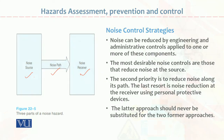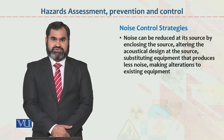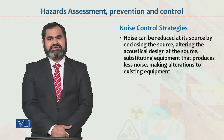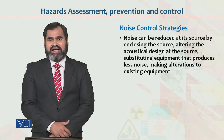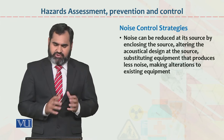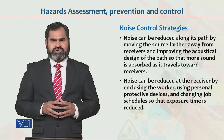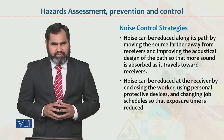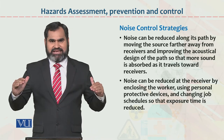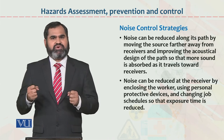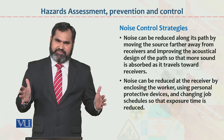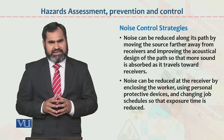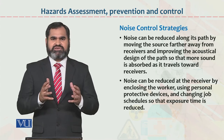Noise control strategies: noise can be reduced at its source by enclosing the source or altering the acoustical design at the source. Sometimes the working method of a machine in the organization is changed so that the noise created at the source is eliminated at the beginning itself. Noise can also be reduced along its path by moving the source farther from the receiver and improving the occupational design along the path. The technical path between where noise is generated and where it is received can have its space enhanced, which also reduces noise significantly.